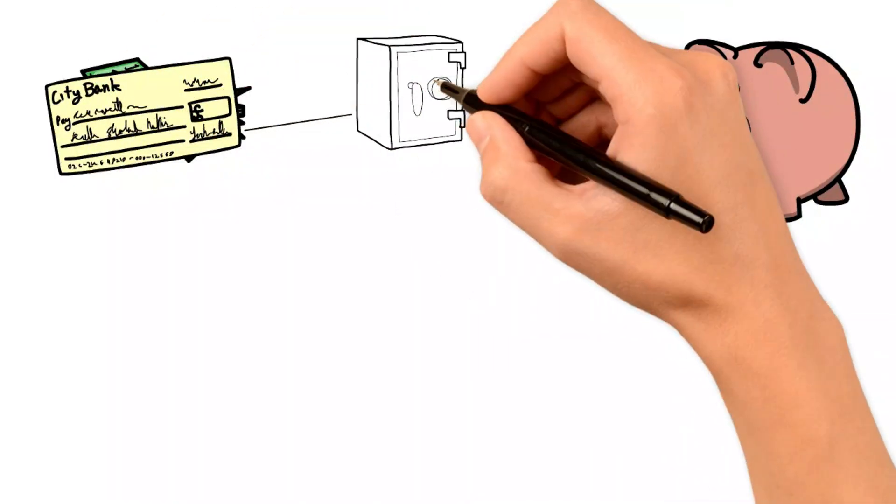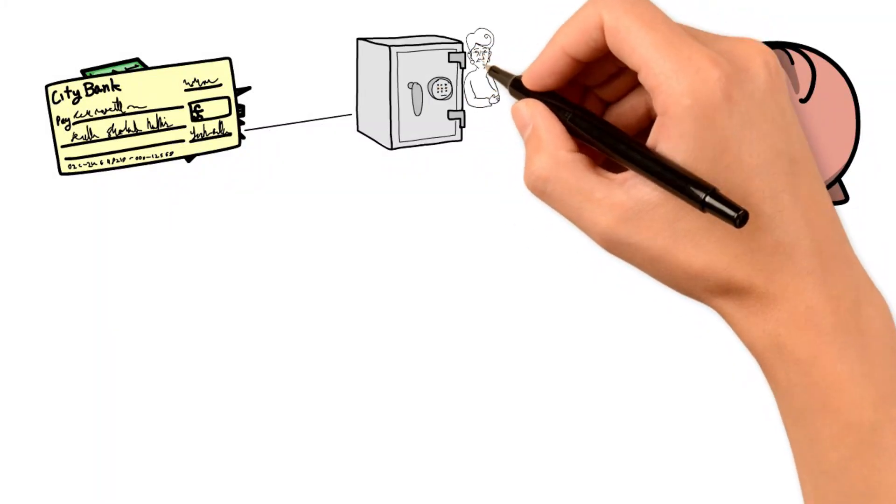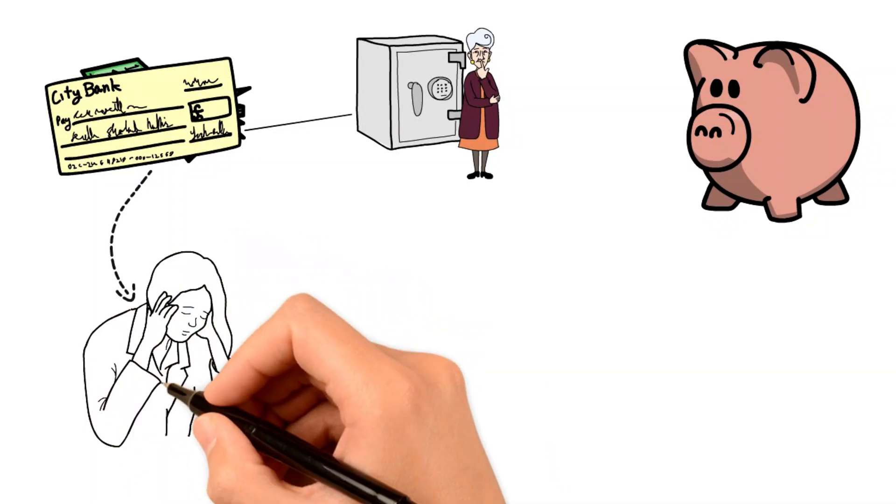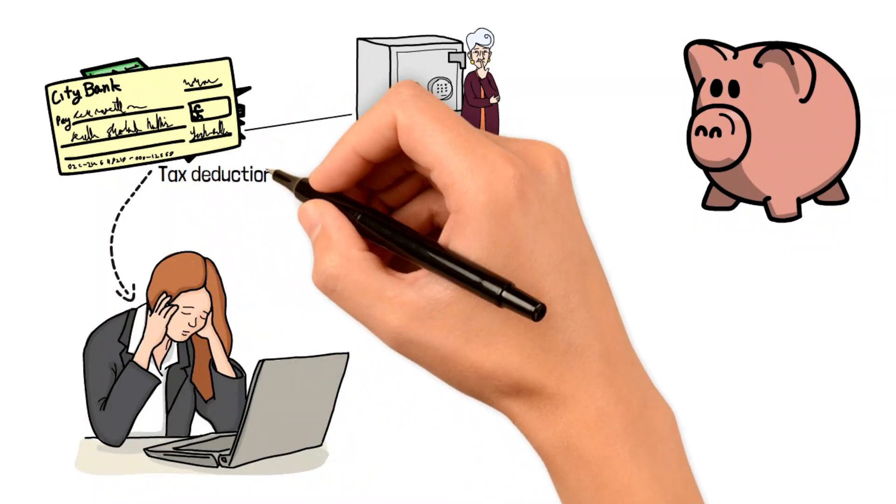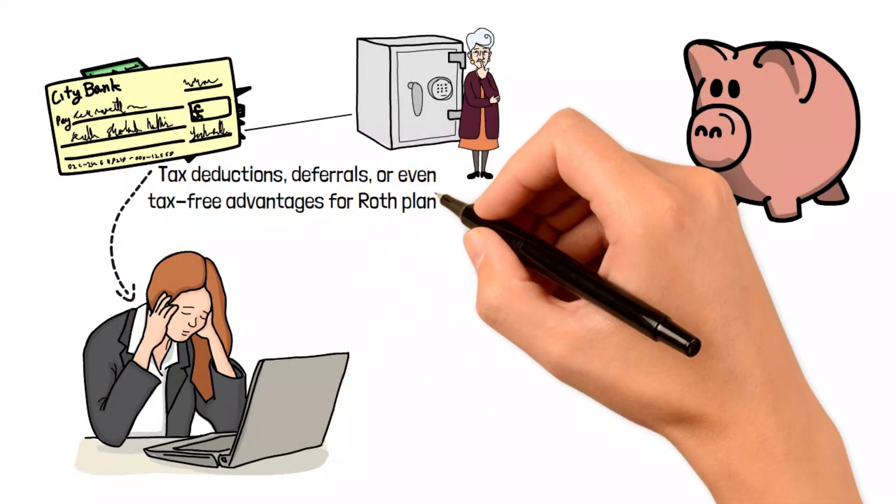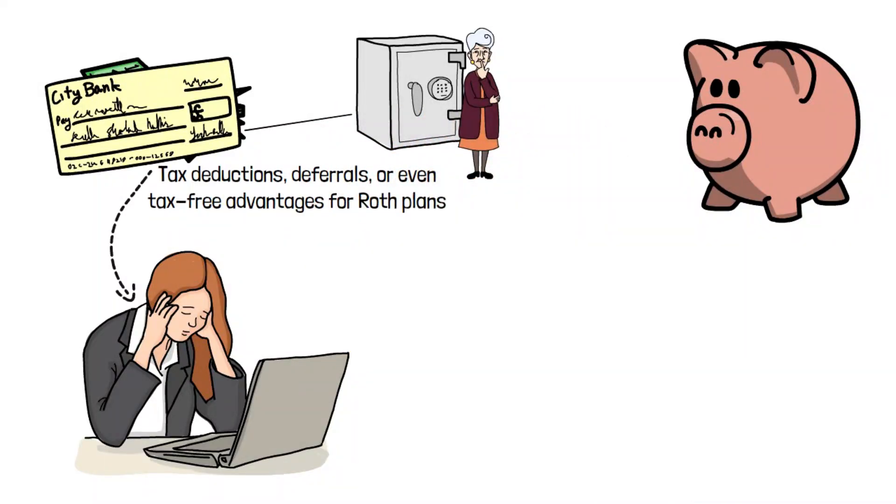Numerous approaches are available for saving money, each yielding distinct interest returns for savers. One convenient method involves directing a portion of your income into a retirement plan before it reaches you. This strategy, which may incorporate tax deductions, deferrals, or even tax-free advantages for Roth plans, ensures that savings are given priority.